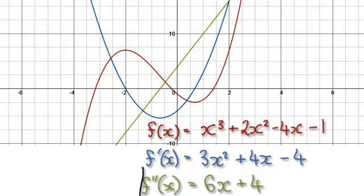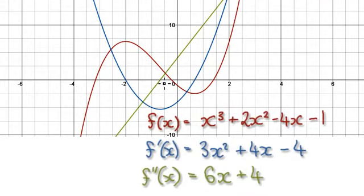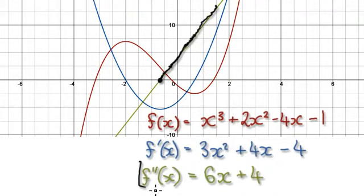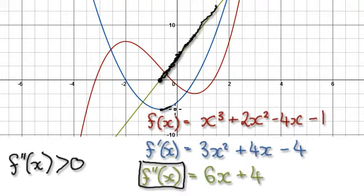If you look at the second derivative being greater than 0 — from 0, the region where f double prime is greater than 0 is this region here. We are looking at f double prime of x being greater than 0, that's this region here. When f double prime is greater than 0, it means that the gradient is always increasing.